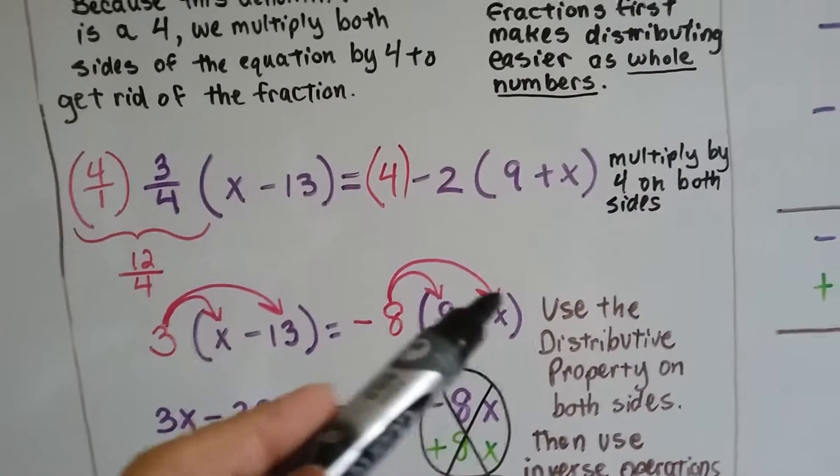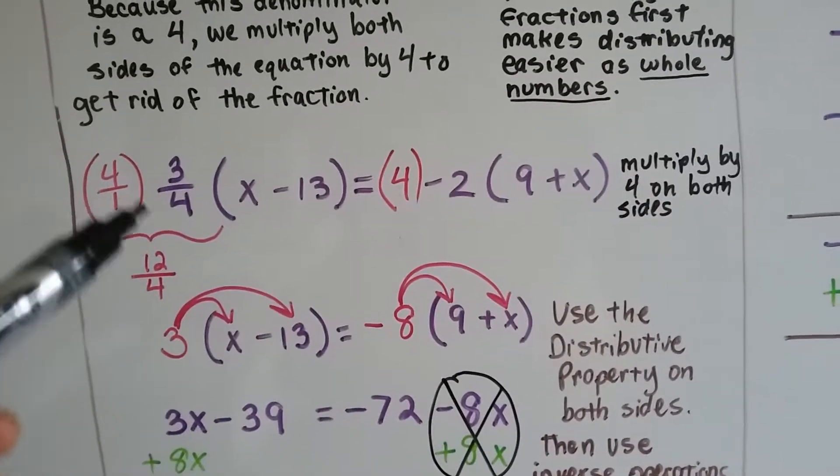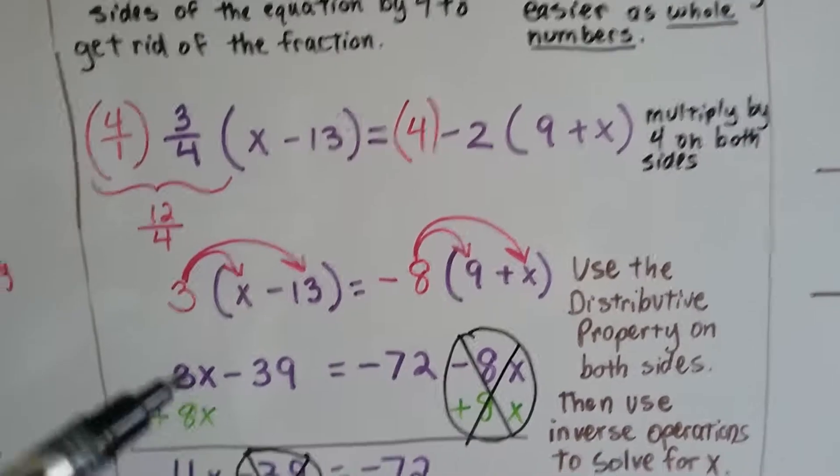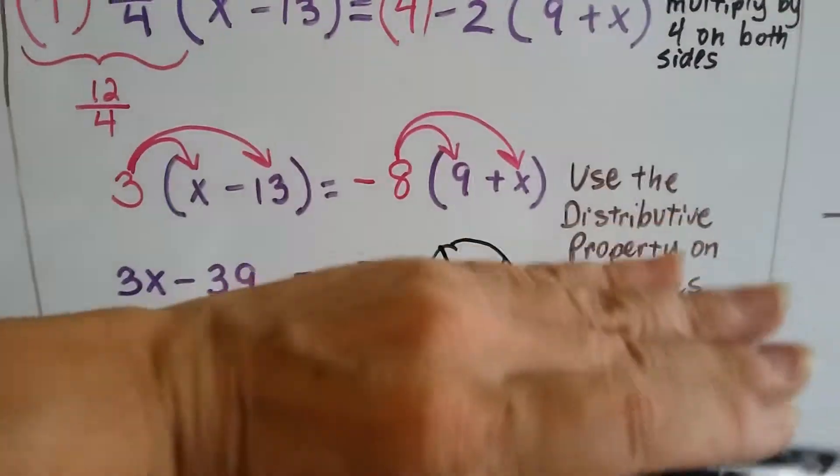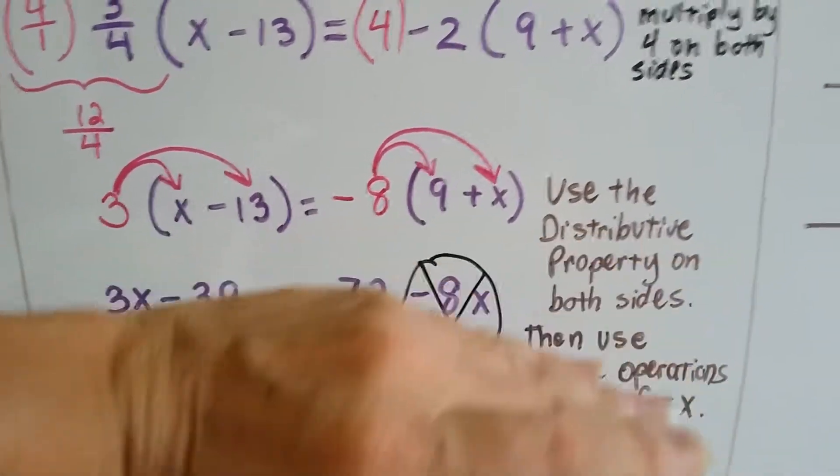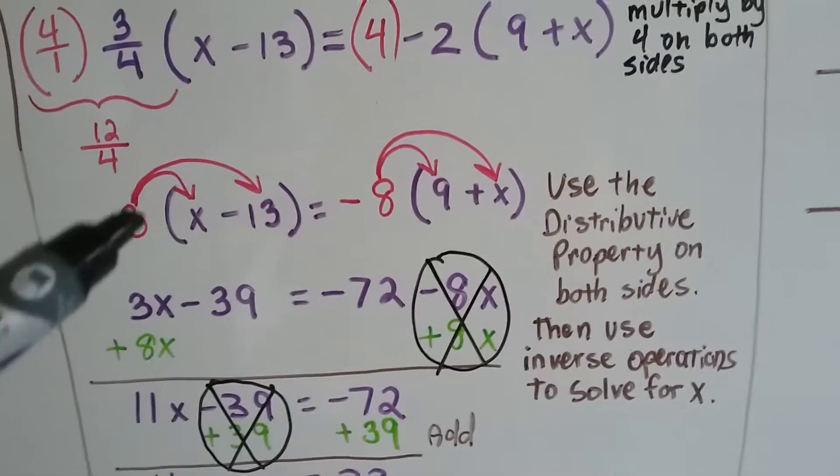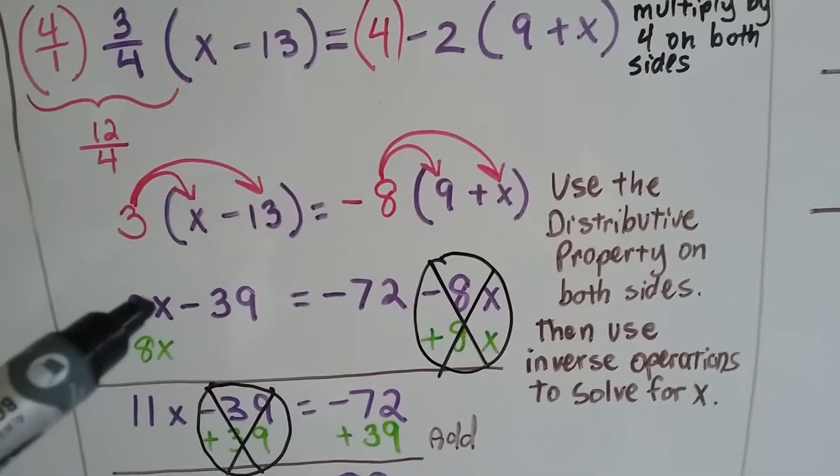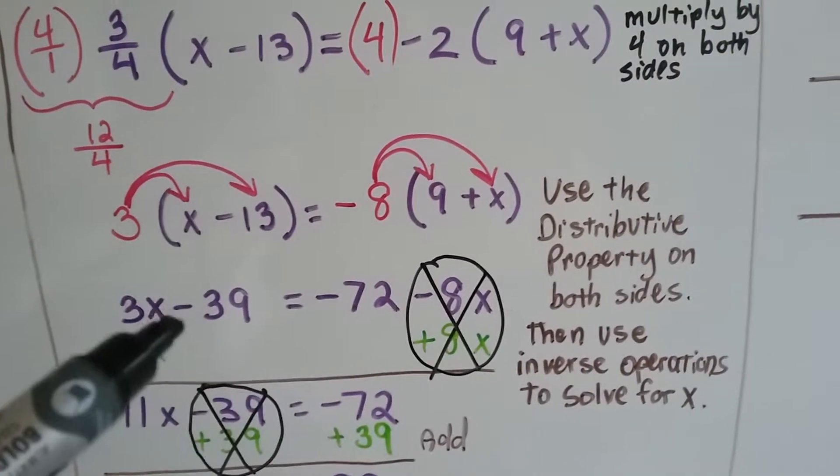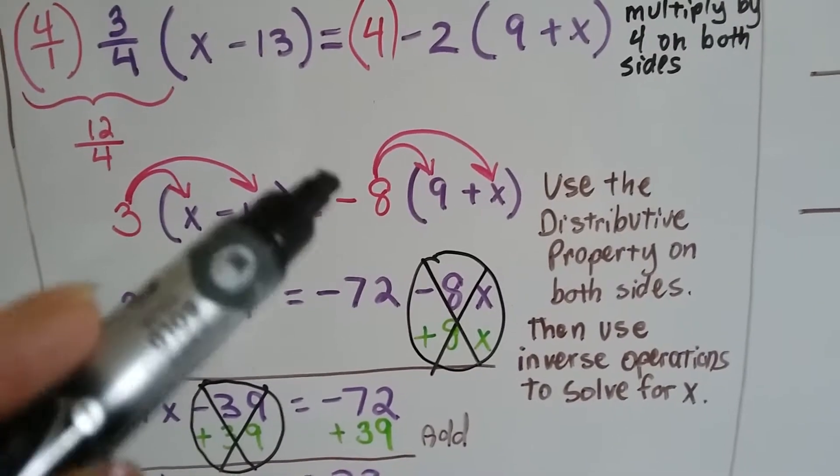Now we're ready to distribute. We got rid of that fraction. This is our new equation, and we're going to use the distributive property on both sides. 3 times x is 3x. 3 times negative 13 is negative 39, and it equals, we drop down the equal sign.